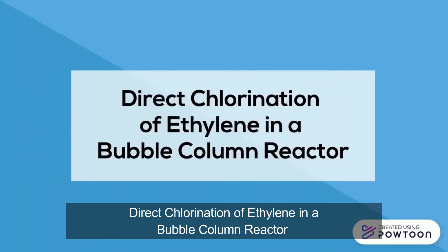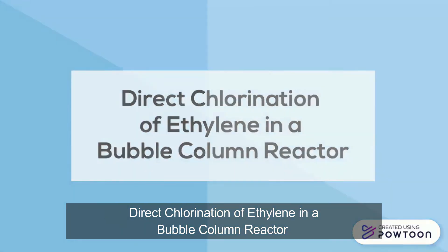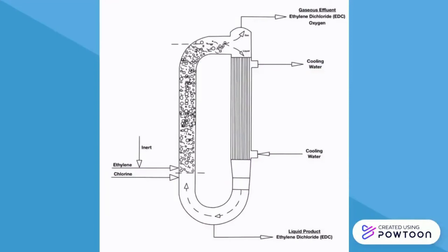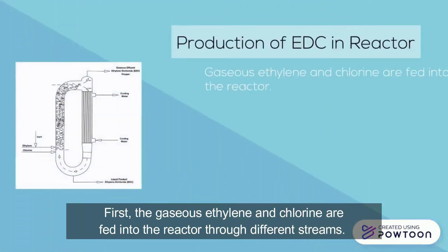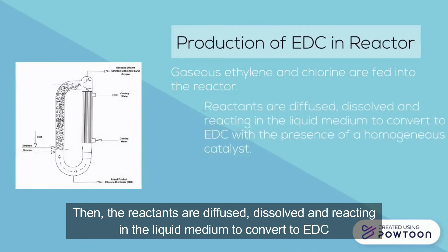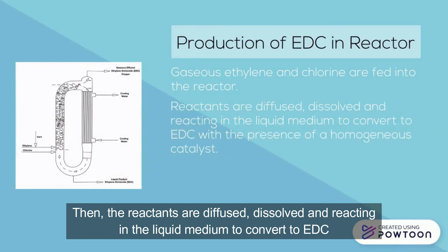The diagram shows the ethylene dichloride synthesis through direct chlorination of ethylene in a bubble column reactor with an external recirculation loop at steady state condition. First, the gaseous ethylene and chlorine are fed into the reactor through different streams. Then the reactants are diffused, dissolved, and reacting in the liquid medium.